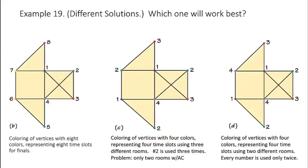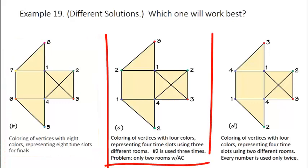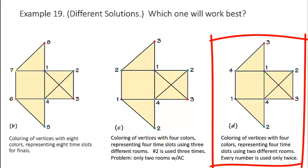To recap, here are some different solutions for our graph. The first shows a coloring of our vertices with eight colors. This is a valid coloring. There are no conflicts, but it would require eight different time slots, so it's definitely not the most efficient. In the middle example, we have four colors representing four different time slots, but using three different rooms because color number two is being used three times. That's similar to what we did. The problem, of course, though, is that there are only two rooms with air conditioning. So the best solution is the last one, the one on the right. A coloring of vertices with four colors representing four time slots, but only using two different rooms. Every number is only used twice.